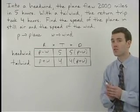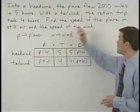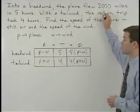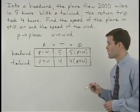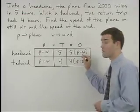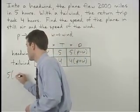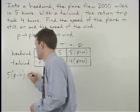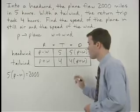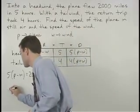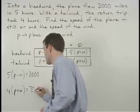Since we know the actual distance that the plane flies in each direction is 2,000 miles, we can set each of our two distances equal to 2,000. So we have five times parentheses p minus w equals 2,000 and four times parentheses p plus w equals 2,000.